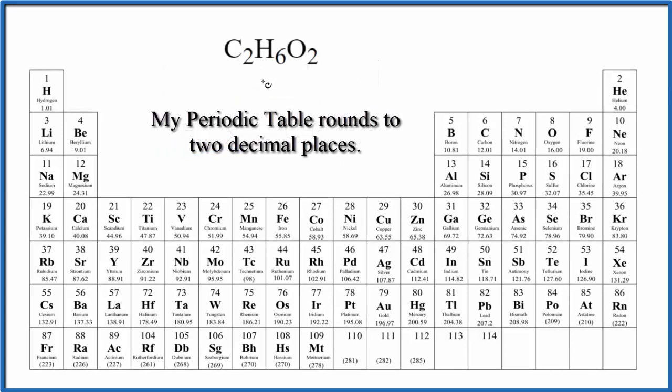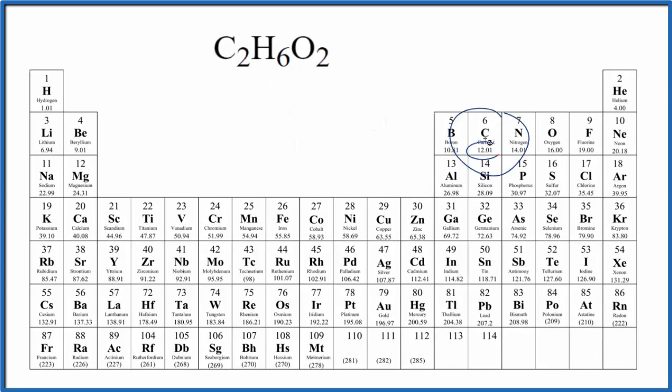So we use the periodic table to figure out the masses here. For carbon, that's right here, that's 12.01 grams per mole. I won't write grams per mole each time. We have two carbon atoms. For hydrogen, that's 1.01 grams per mole, and we have six hydrogen atoms. Then for oxygen, that's here, 16.00 grams per mole, and we have two oxygen atoms.